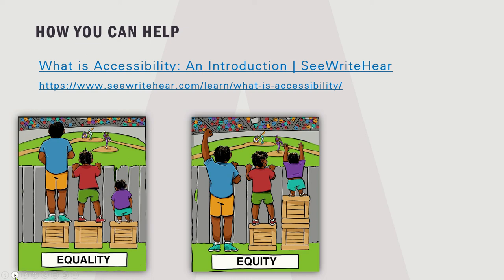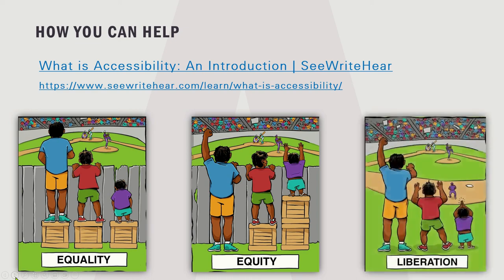Rather than giving students extra assistance to work around unresponsive materials, it's better to use tools like accessible OER that already meet the diversity needs of all students. Why make the one who needs the most help do the most work to see over the fence? Why does there even have to be a fence? If you get rid of the fence, then none of your students have to do additional work before they can begin their assignment. Now that's liberation.